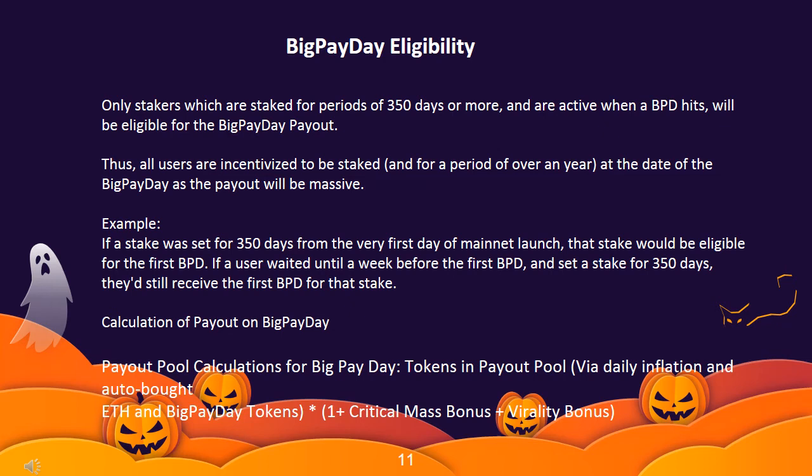Calculation of payout on Big Pay Day: payout pool = tokens via daily inflation and auto-bought ETH, plus Big Pay Day tokens × (1 + critical mass bonus + virality bonus).